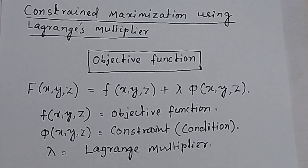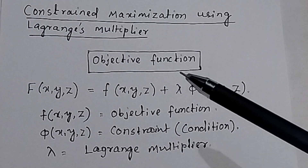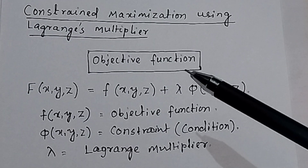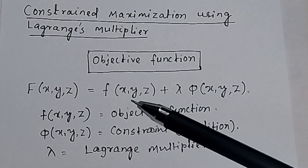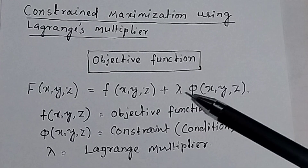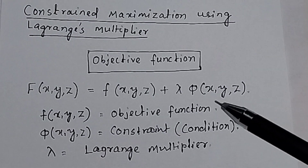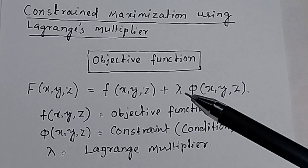So, in constraint maximization using Lagrange multiplier, first we want to know about the objective function. The objective function is f, the constraint or condition is phi (φ), and lambda (λ) is called the Lagrange multiplier.